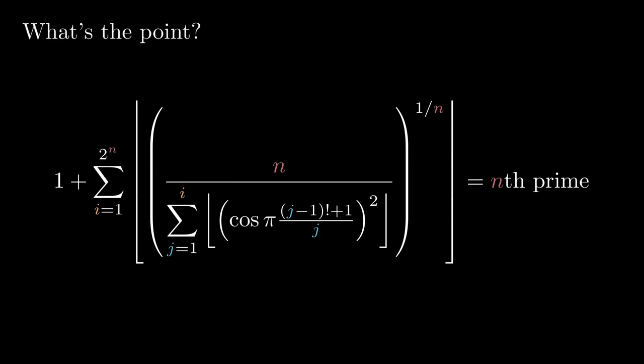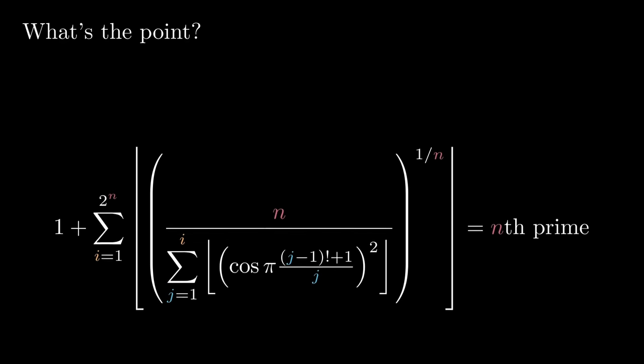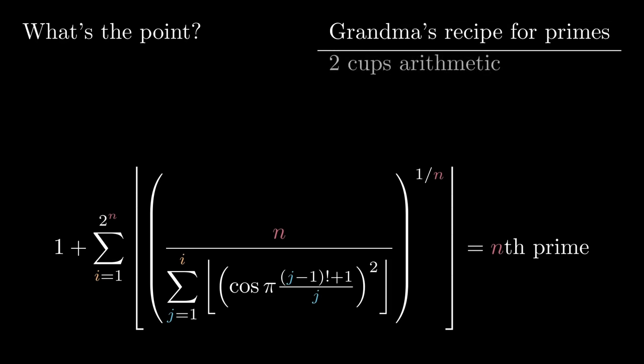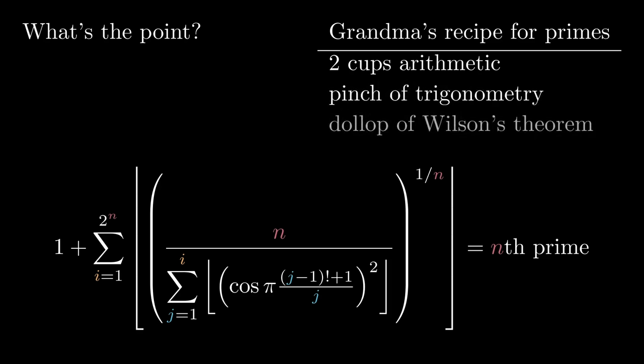So what's the point of Willans' formula? Well, you could think of it as a joke, like, haha, here's a formula for the nth prime that is correct but totally useless. But there's something more interesting going on. At its core, Willans' formula isn't telling us how to compute primes. It's telling us what's possible to engineer with the basic ingredients of arithmetic, a pinch of trigonometry, and a dollop of number theory in the form of Wilson's theorem. It shows that you can use basic arithmetic functions as a programming language, and that that programming language is expressive enough to describe the nth prime number. And that's pretty surprising.